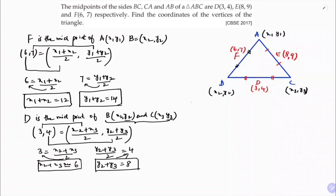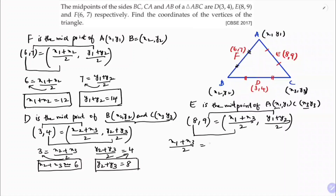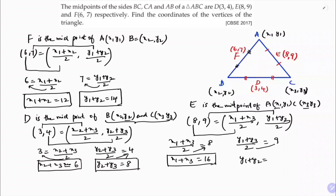E is the midpoint of A(x1, y1) and C(x3, y3). E is (8, 9), so applying the midpoint formula: x1 plus x3 by 2 equals 8, and y1 plus y3 by 2 equals 9. Equating gives x1 plus x3 equals 16, and y1 plus y3 equals 18.